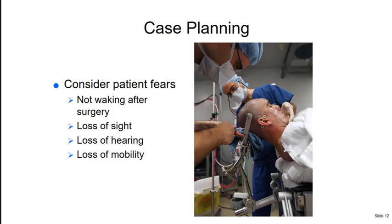Neurosurgery patients may appear unconscious but may actually be highly aware of their surroundings — brain surgeries are sometimes performed while patients play guitar or work on a computer to check function. Because of this, we must be very careful about communication during case planning. Consider that the patient may be awake, and consider their fears — brain surgery carries the potential for loss of mobility, sight, or hearing. Provide emotional and psychological support to the patient.